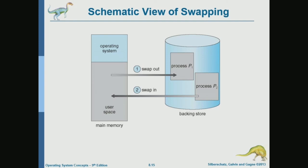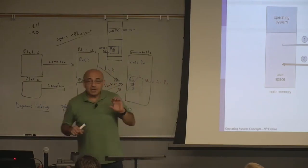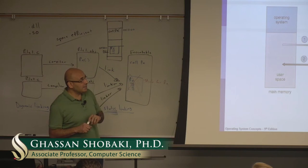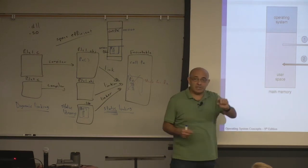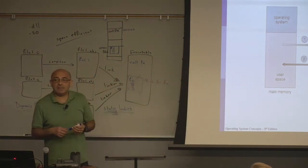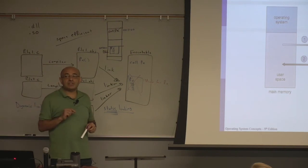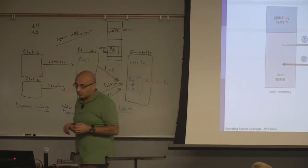This scheme is described only to understand that it's inefficient. What we will be studying later in memory management is memory management based on paging. In paging, the memory block that belongs to a process is divided into pages — into smaller pieces called pages — and swapping happens at the page level. Modern operating systems do not swap a whole program; they swap pages. Management is done at the page level, and swapping a page is much, much faster than swapping a whole program.